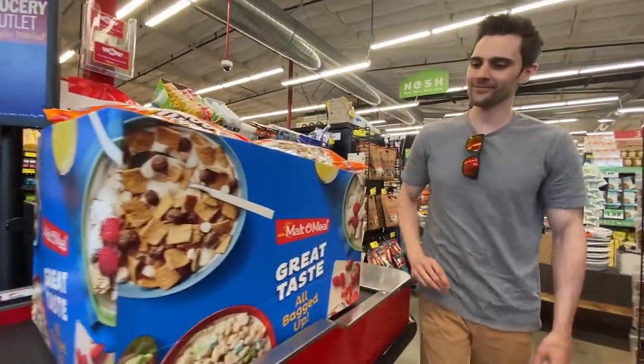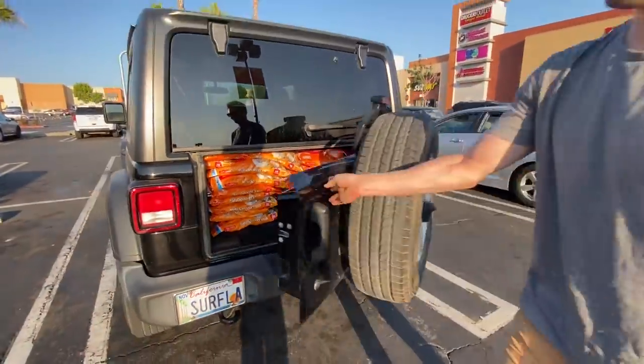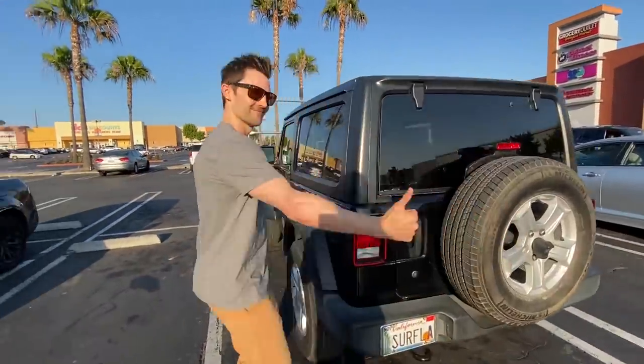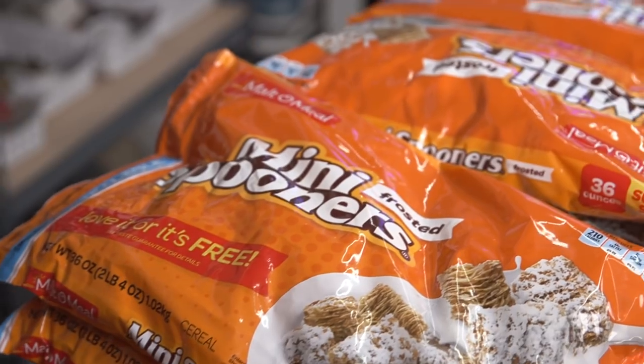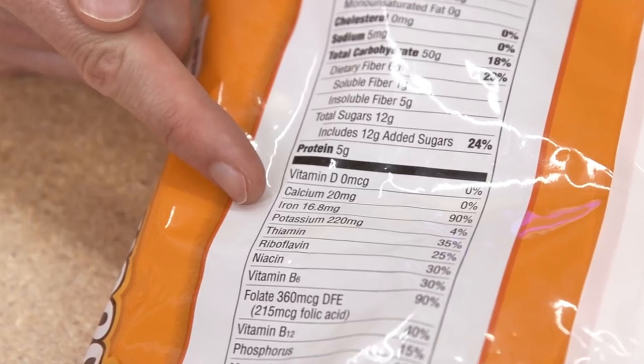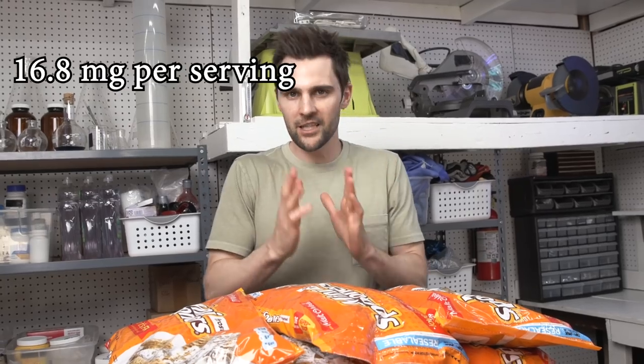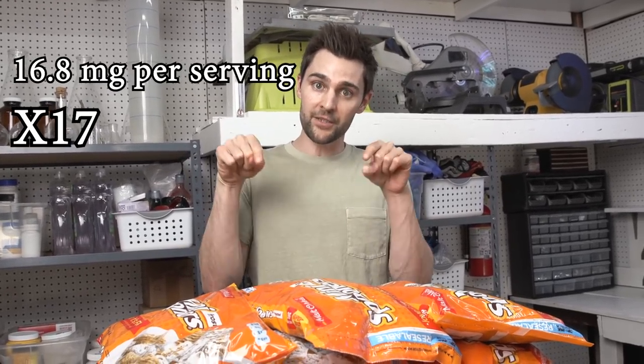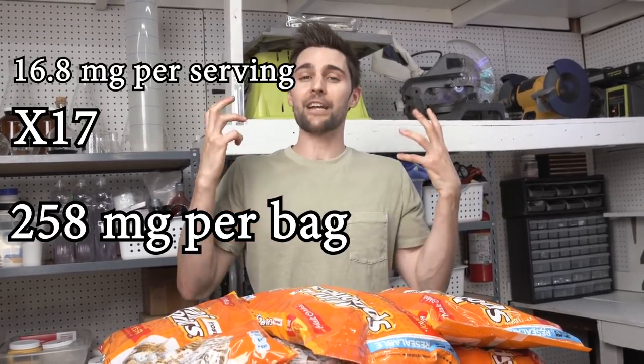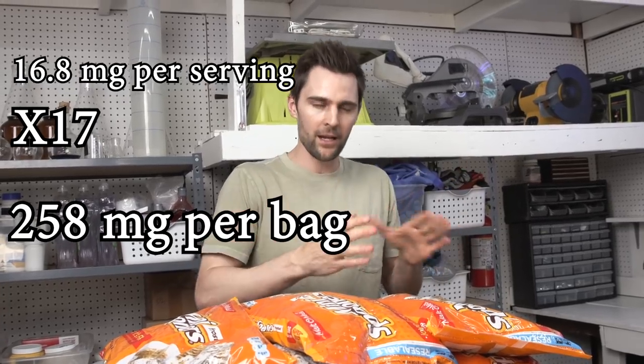We went to a discount store and grabbed 20 bags of this knockoff frosted mini wheats. They cost $2 each. Each serving of this cereal has 90% of the daily value of iron. This came out to 16.8 milligrams per serving, and there are 17 servings in each bag. So that came out to 258 milligrams per bag.